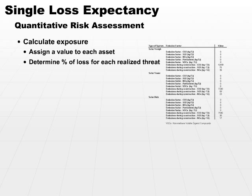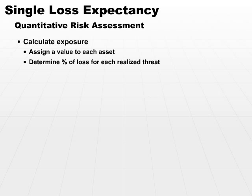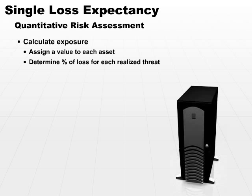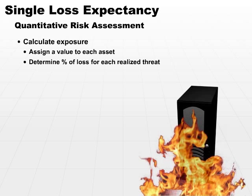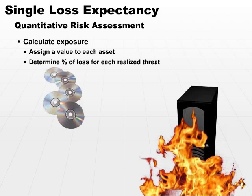Then, determine the percent of loss for each realized threat. For example, assuming the asset is our computer system — our basic file server — and the threat is a fire. Generally speaking, if you burn your server to the ground, the loss is 100%. However, it's possible that a threat could cause only a 50% loss. You need to determine how much a loss is going to affect a particular asset.